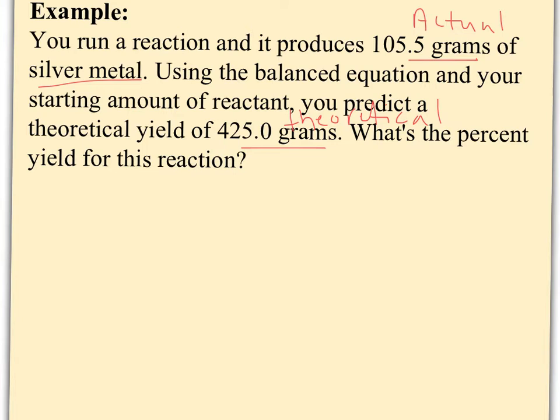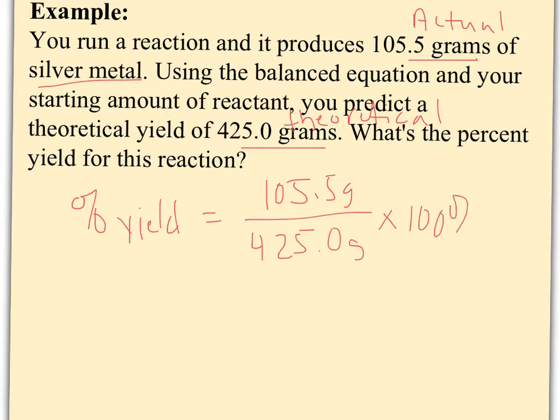So calculating percent yield then, I take the part, should always be the smaller amount for your actual, 105.5 grams. I divide it by the predicted amount, 425 grams, times 100%. And my percent yield doesn't look that great.